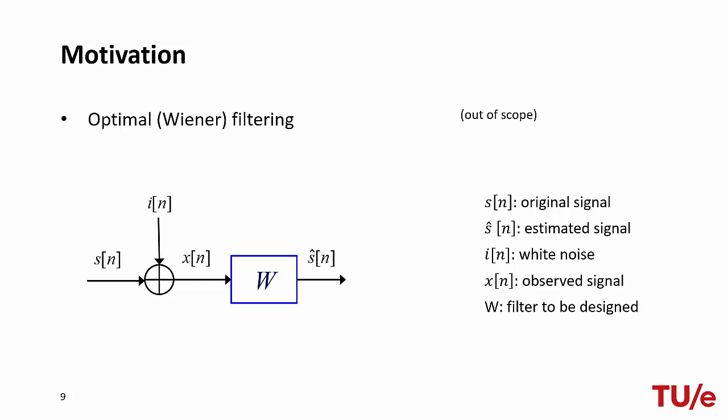Another important application of spectral factorization is optimal filtering. Exploiting the knowledge of the statistical properties of a random signal and assuming additive white noise, Wiener filters can be designed to filter noisy random signals and obtain an estimate of the original signal. However, this topic is out of the scope of this course, so we won't go any further on this.